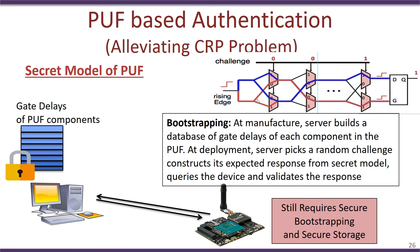However, this technique still has a limitation. The PUF model must be kept extremely secret, because if it is stolen, an attacker could intercept the challenge sent from the server to the edge device, use the stolen model to compute the correct response, and get authenticated without actually having a PUF. In this way, the attacker's machine can get authenticated without owning the correct PUF.